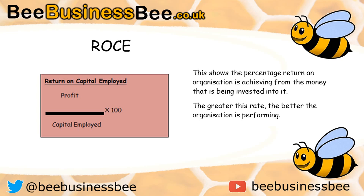Finally we have the return on capital employed, or ROCE. This is calculated as operating profit (or net profit) divided by capital employed, times 100. This formula shows the percentage you get back on the money you invest in the business. You want as high a rate as possible — it needs to be higher than bank interest because investing in a business carries risk, so you're always looking for a figure higher than the safe bank option.